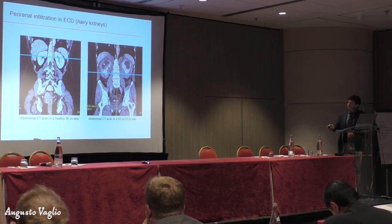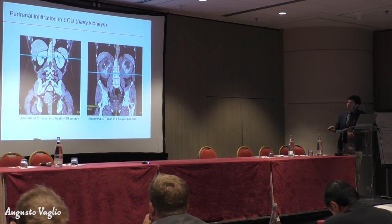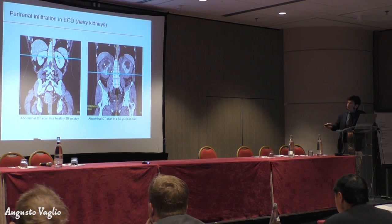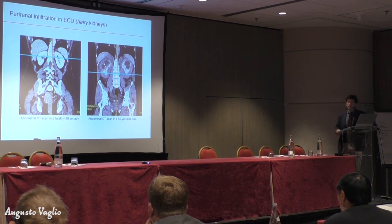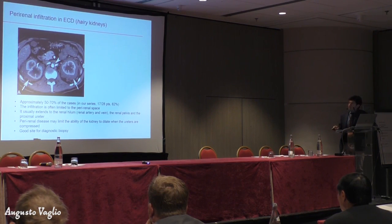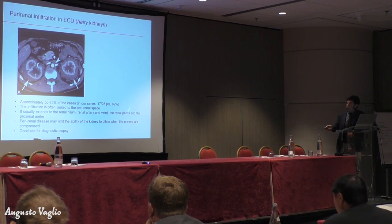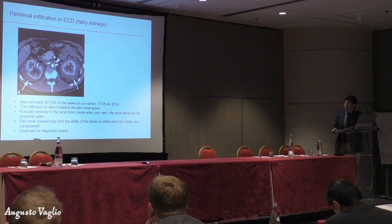This is another view using a CT scan. We can see here the healthy subject and what happens in patients with ECD. These are the kidneys and there is this tissue around the kidneys bilaterally and the collection of urine within the kidney. So if the kidney is obstructed, its function is affected most of the time. Perirenal infiltration affects approximately 50 to 70 percent of patients with ECD — in our series the percentage is 62 percent, in line with other studies. This is one of the most common manifestations of the disease.